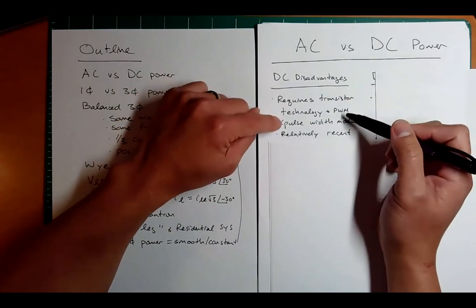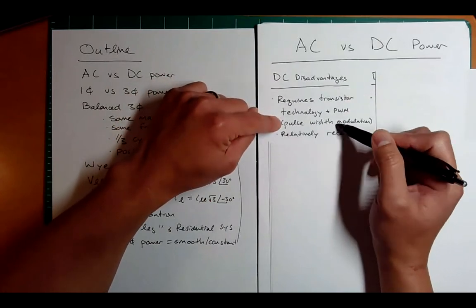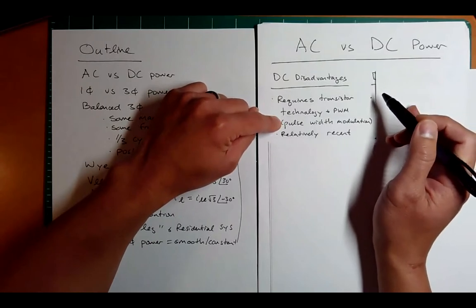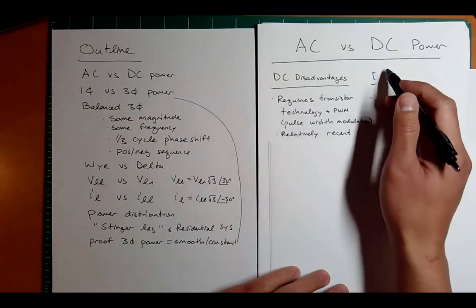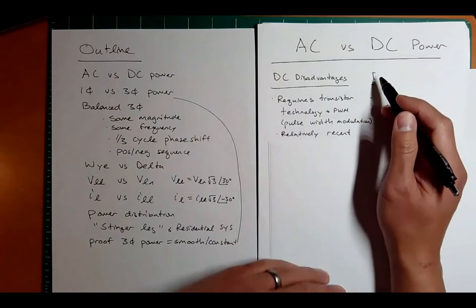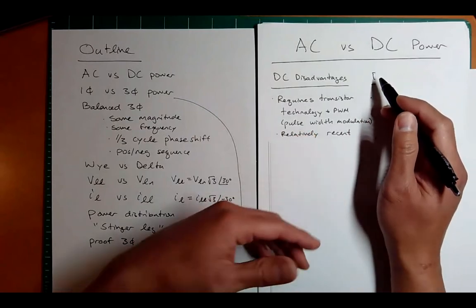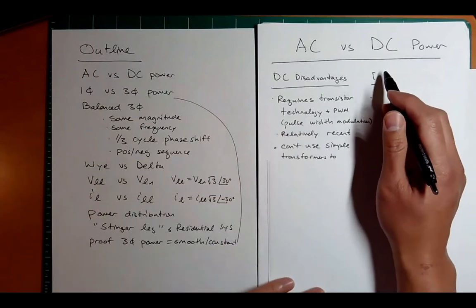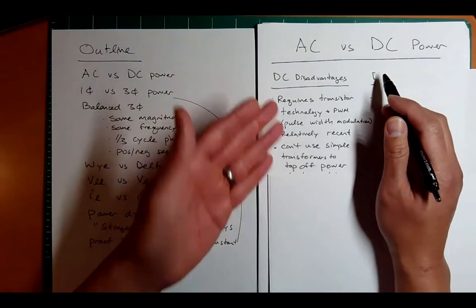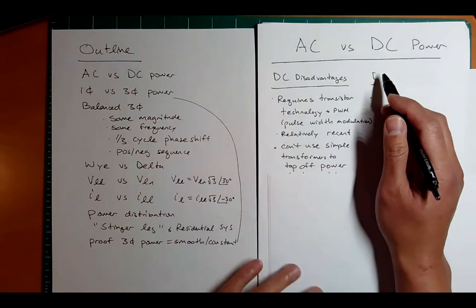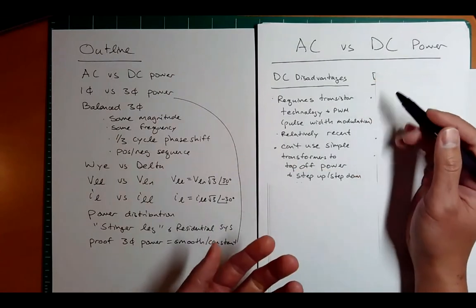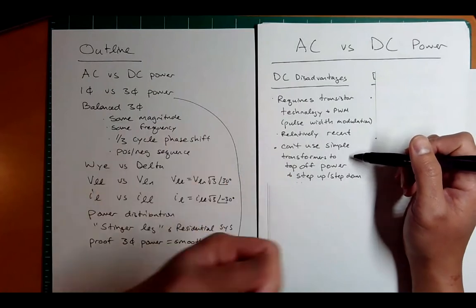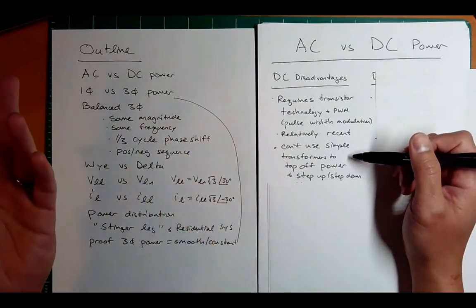For DC, it also requires PWM or pulse width modulation — we'll see that in the next semester class. That's basically a square wave waveform that allows us to modulate a DC voltage. DC can't use simple transformer technology to tap off power and step it up and step it down. Transformers are relatively simple — just coils of wire around steel.